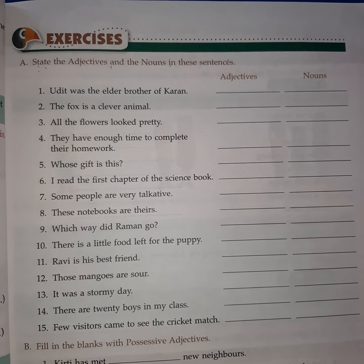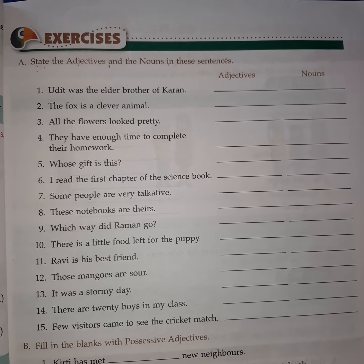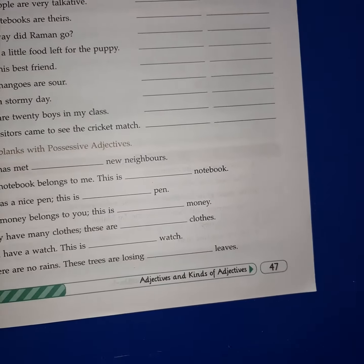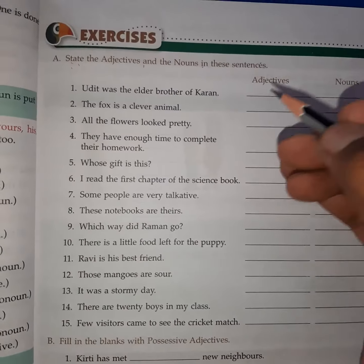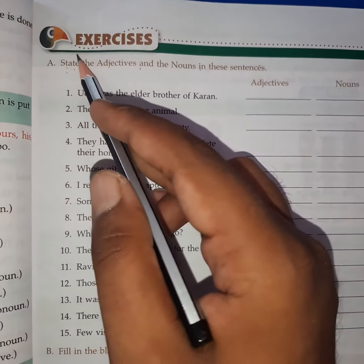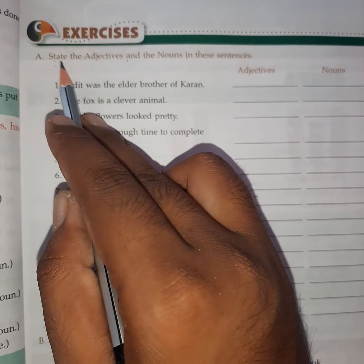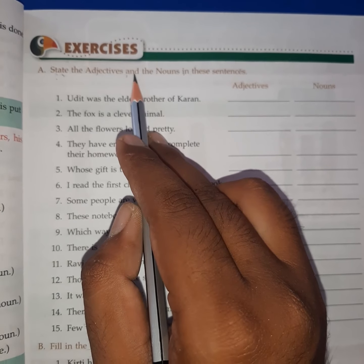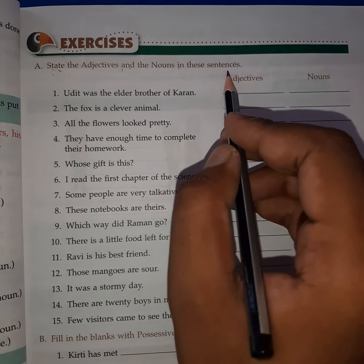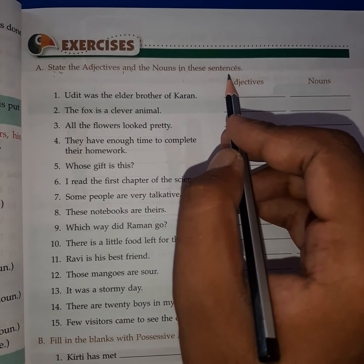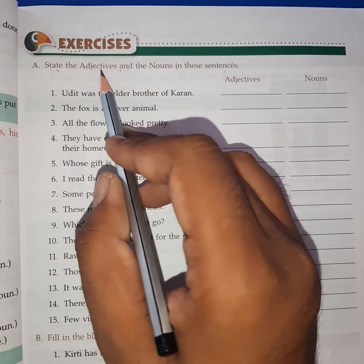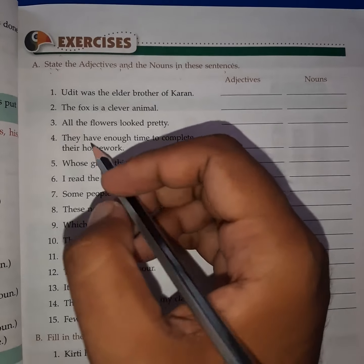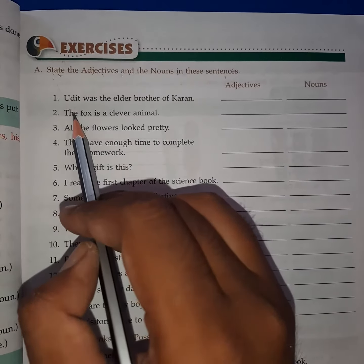Hello students, today we are starting an exercise which is on page number 47, this is Exercise A. The instruction says: state the adjectives and the nouns in these sentences. हमसे बोला जा रहा है कि इन sentences में से adjectives को और nouns को अलग अलग करके लिखना है।